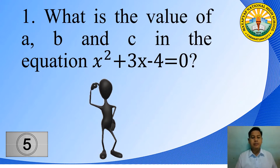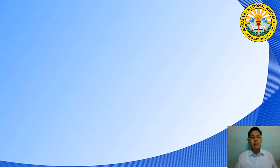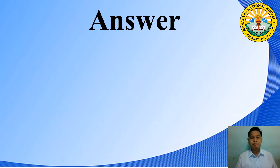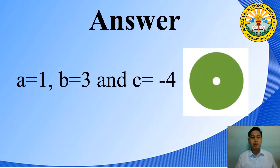Timer starts now. What do you think is the answer? Good job! A is equal to 1, B is equal to 3, and C is equal to negative 4.